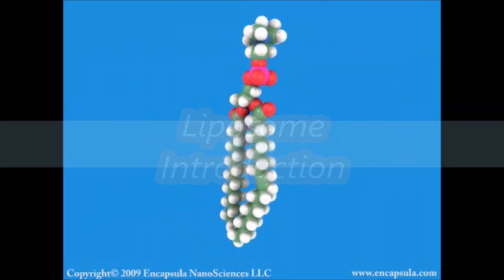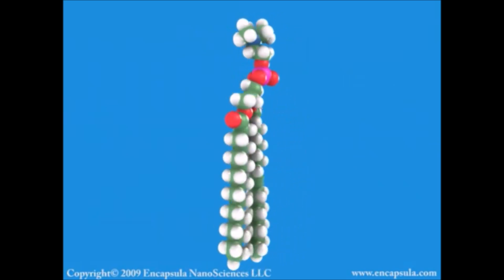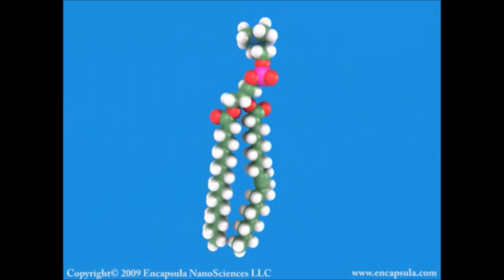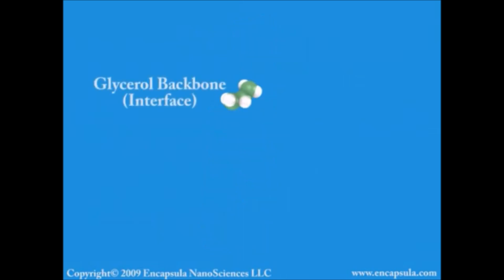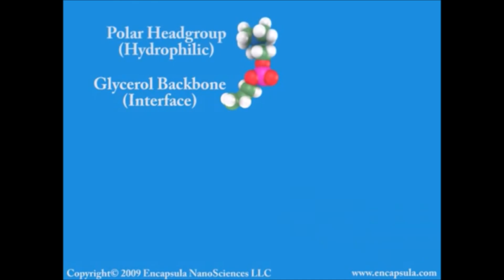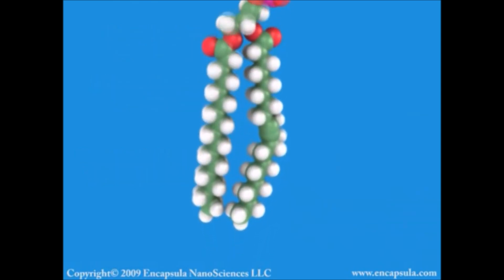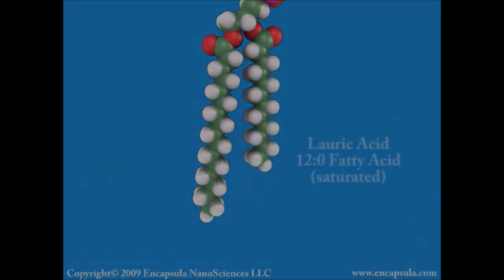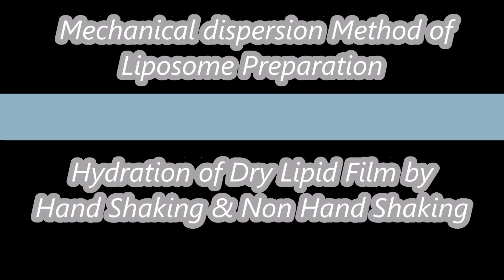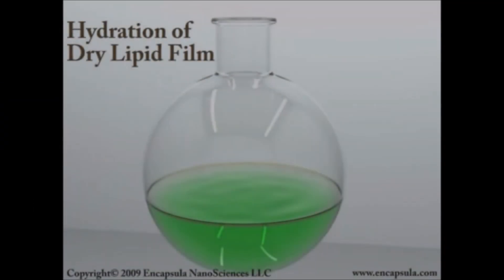The basic molecular building block of a cell membrane as well as a typical liposomal membrane is a phospholipid. Phospholipids are built on a glycerol backbone; phosphorylated molecules are esterified to carbon-3 of the glycerol, forming a polar head group. Fatty acids are esterified to carbon-1 and carbon-2 of the glycerol. Phospholipids are known as polar lipids because the phosphorylated portion is polar or water soluble, while the fatty acid tails of the molecules are nonpolar.